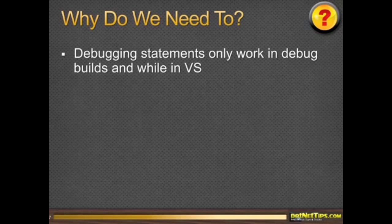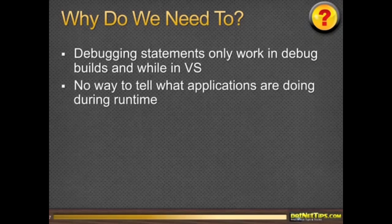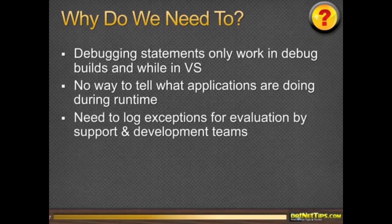The big reason to log is that debugging statements only work in debug builds. Once you do a release build they're all gone, so we need a better way to track things. There's no way to tell what the application is doing during runtime. It all works on my machine, but as soon as you get it out somewhere — especially on production servers — that's the worst, and the stuff starts happening. So while they're running it's really important to find out what's going on.